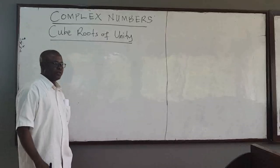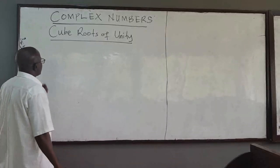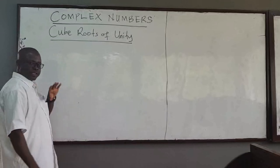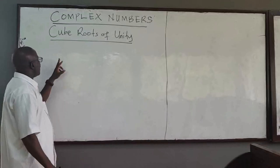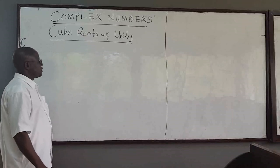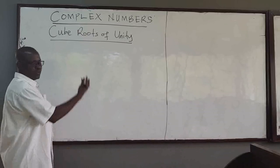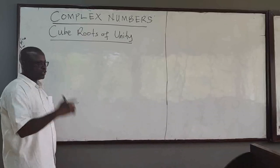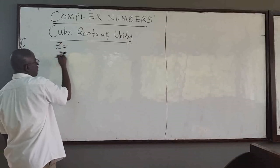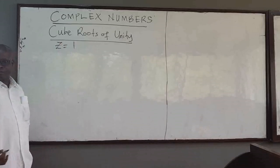Welcome to our next lecture. Here we want to look at the special cases, as I mentioned in the previous video — the special case of the nth root. In this case, we want to look at the k-th roots of unity. Unity just means one, so z is equal to the complex number one, and we want to find the k-th roots of one.